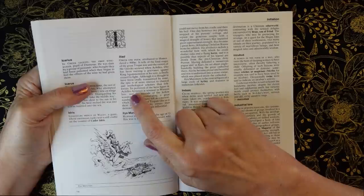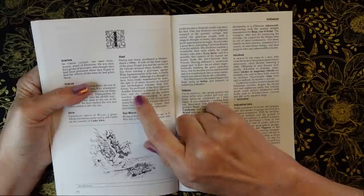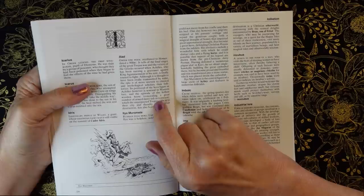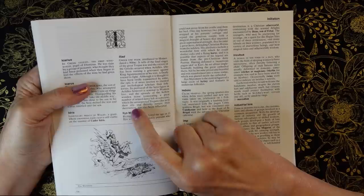Although it is thought to have been orally transmitted, the epic is of more interest to classical and mythological scholars than folklorists. Its portrayal of the hero-figure in Achilles is seminal in Western lore, and the episode of the Hollow Wooden Horse, concealing a great number of armed men left as a present, which the unsuspecting Trojans take into their city and thereby ensure their destruction has also been influential.